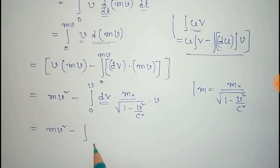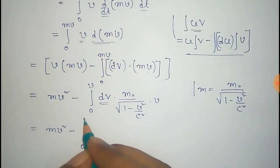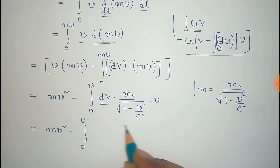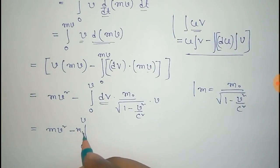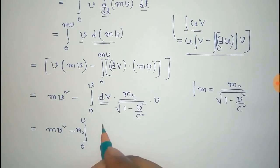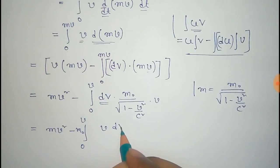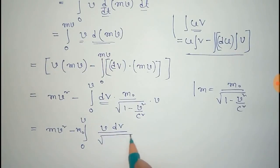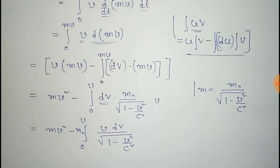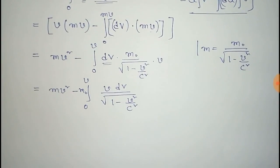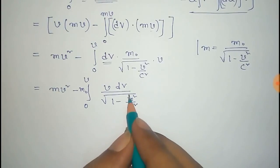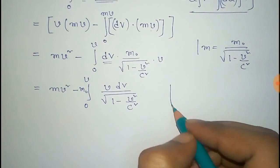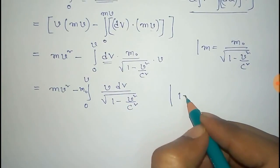The limit changes to 0 to V. Since M₀ is a constant, it comes out of the integral, and the remaining integrand is V dV divided by the square root of (1 - v²/c²).